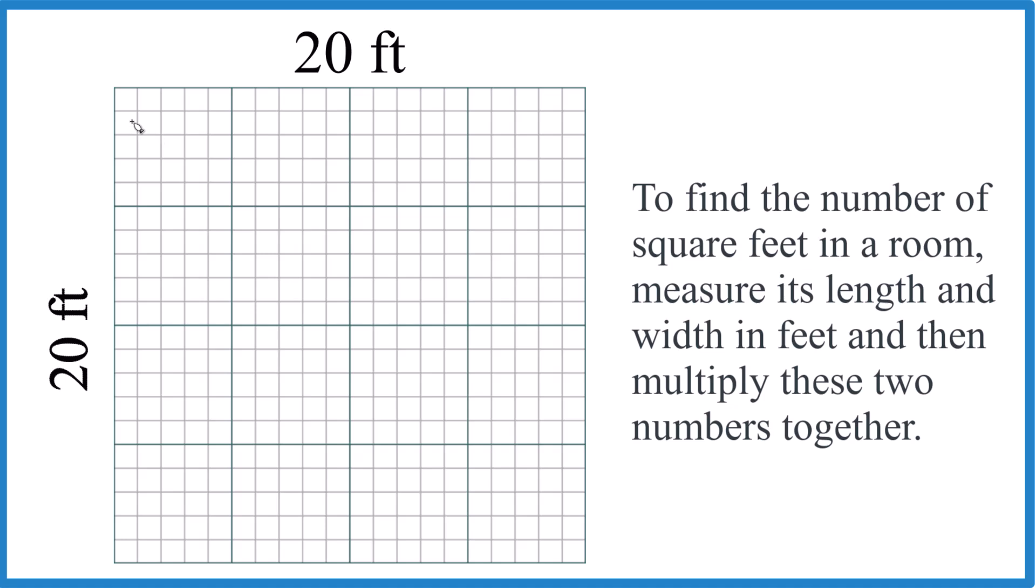So this graph here, each one of these tick marks is one foot. And if you go all the way across, you'll get 20 feet here. And if you go down, you'll get to 20 as well.